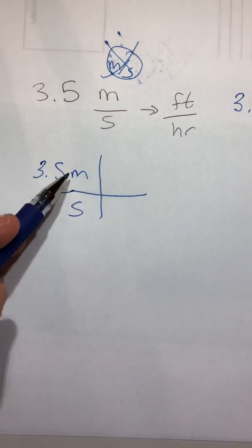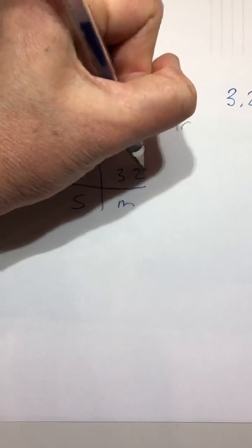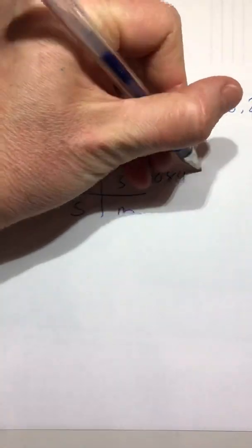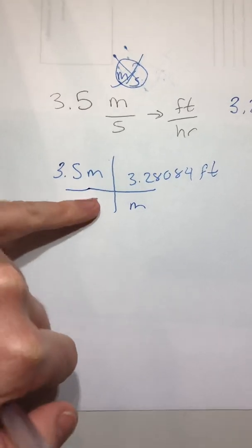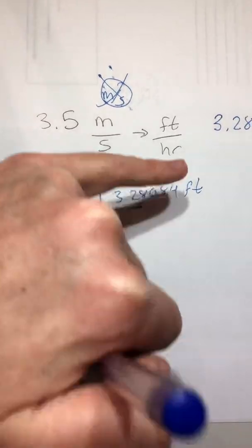So down here we'll say 3.5 meters. In a meter, there are 3.28084 feet. Looking only at the meters first and changing them to feet. Now meters can cancel. Now we're in feet per second.